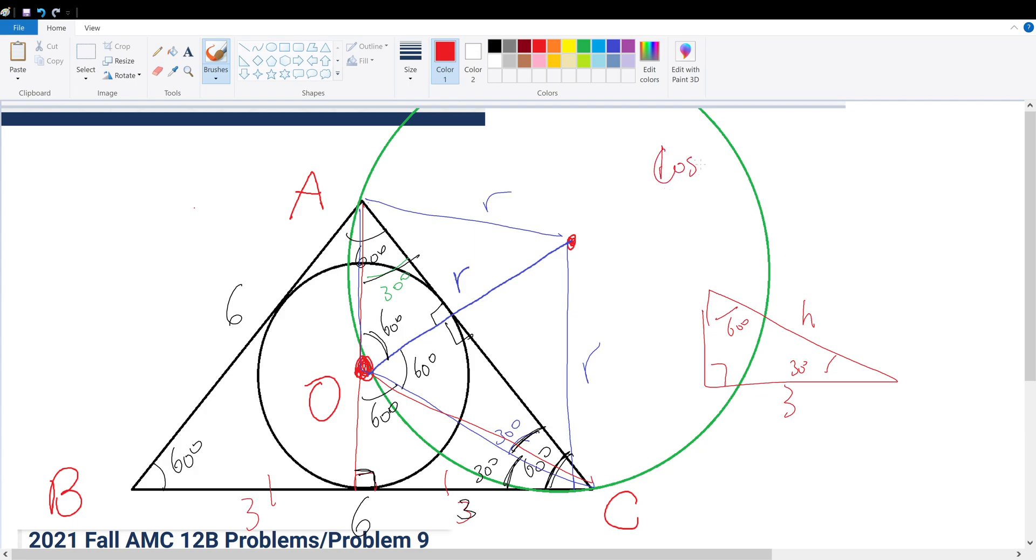Cosine 30 equals 3 over H, so H equals 3 over cosine 30, which is square root of 3 over 2, which will be 6 over square root of 3. So our length OC is 6 over square root of 3.